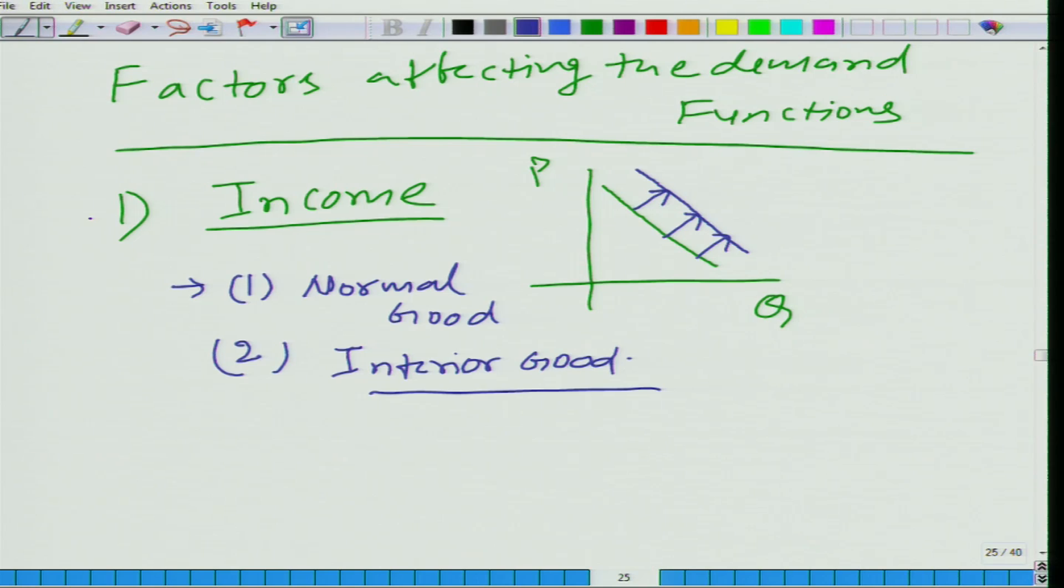So one factor is income. How about the second factor? Income we discussed today even before we started discussing about factors affecting the demand function. So think about it, we discussed some other factors also in the course of discussing demand function. This is for, let us say, here income goes up, then this is the case of normal good.